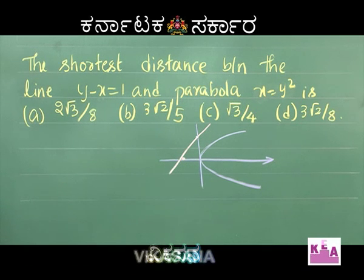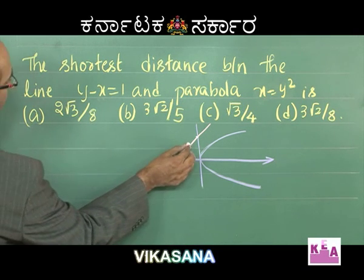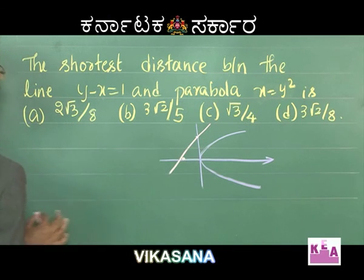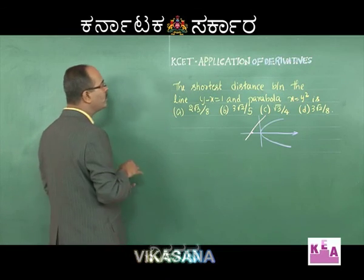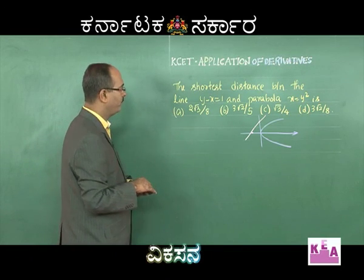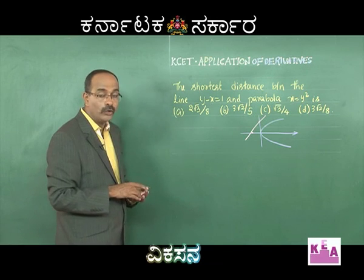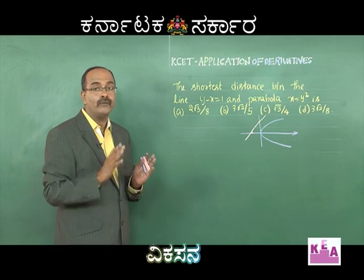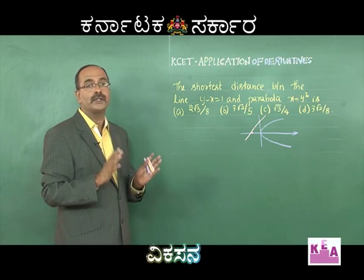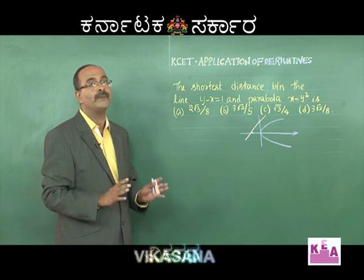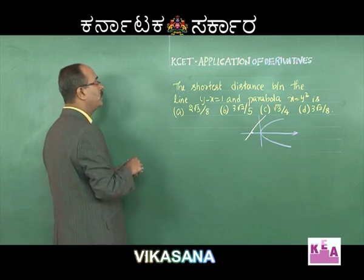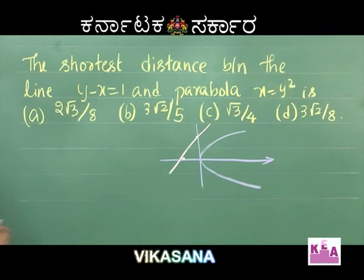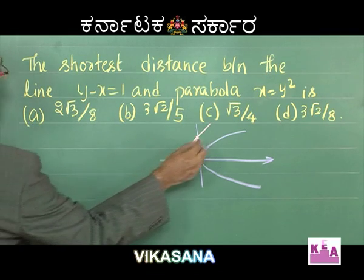The shortest distance may be at various positions — that has to be evaluated. To find that, we use the concept of application of derivatives, but let us avoid it. We have x = y².